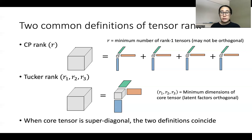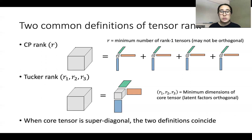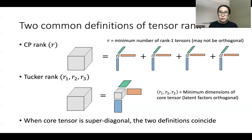When the core tensor is super-diagonal, these two definitions coincide, and it implies there is an orthogonal way to write the tensor as a sum of rank-1 tensors where all latent factors are orthogonal — that comes directly from the Tucker rank decomposition. The majority of this talk will focus on tensors with such an orthogonal CP rank decomposition, corresponding to a Tucker decomposition where the core tensor is super-diagonal, but our results do extend beyond this setting.